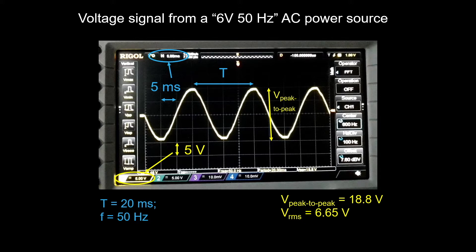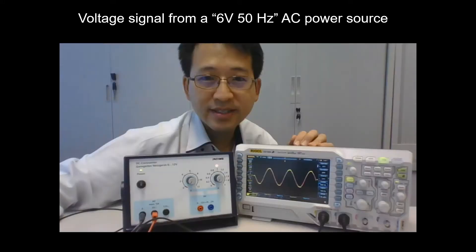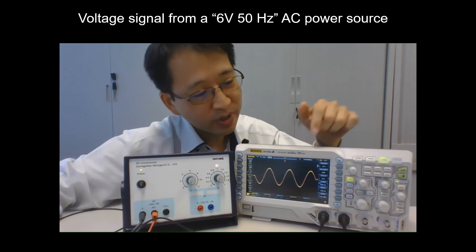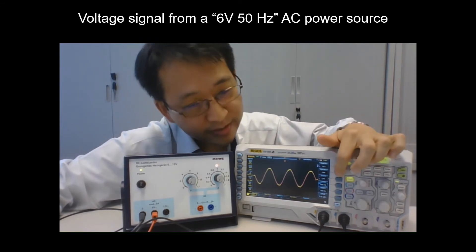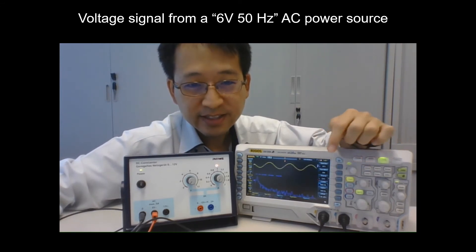You may notice that the signal is not a pure sine curve as there are some kinks in it. The oscilloscope is able to do a Fourier transform of the signal so we can see the harmonics.